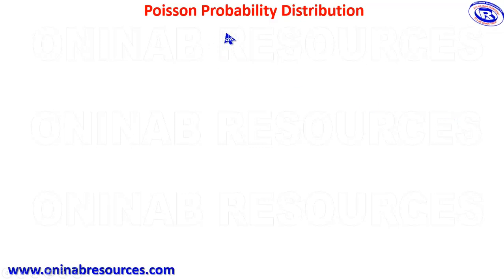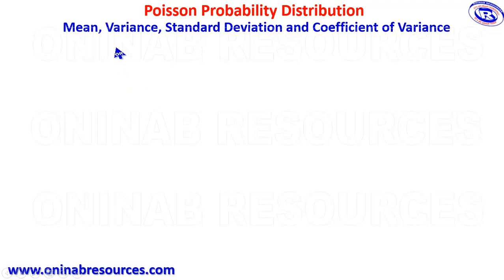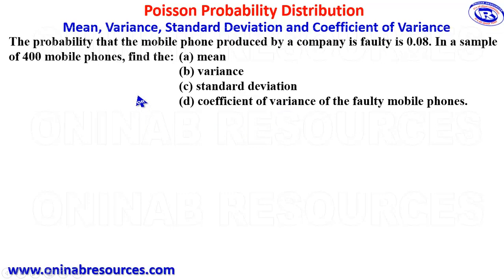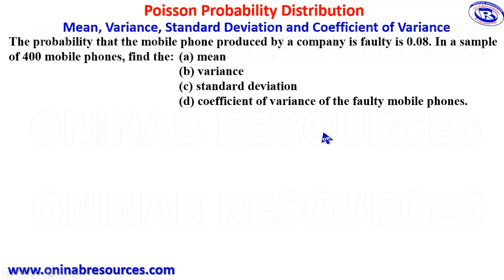Welcome to this tutorial on Poisson probability distribution, where we'll be calculating mean, variance, standard deviation, and coefficient of variance. The problem: the probability that a mobile phone produced by a company is faulty is 0.08. In a sample of 400 mobile phones, find the mean, variance, standard deviation, and coefficient of variance.